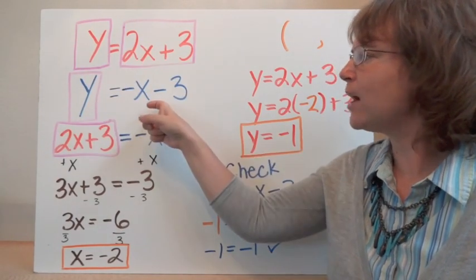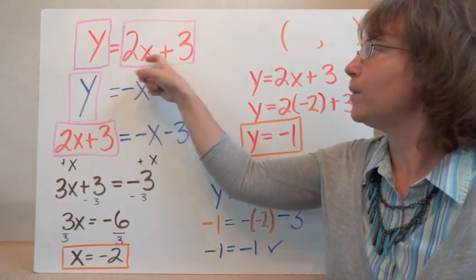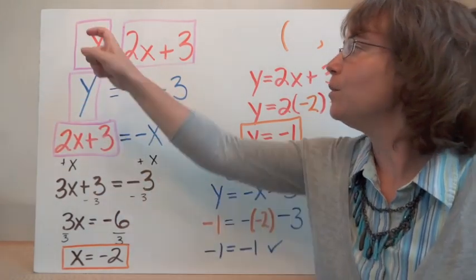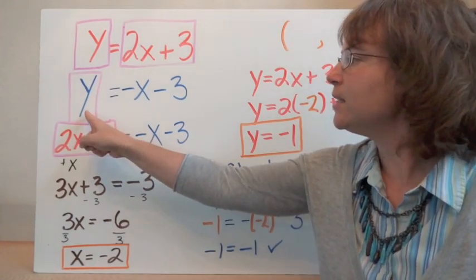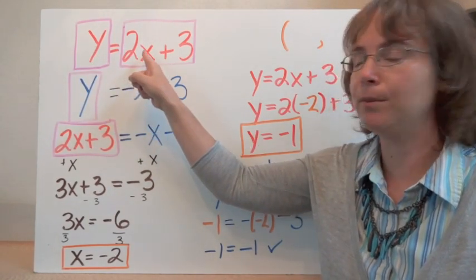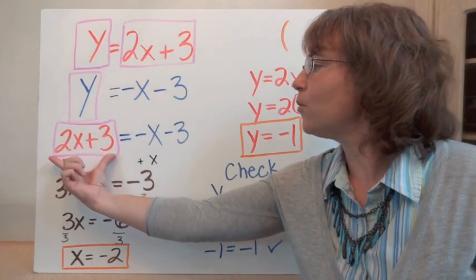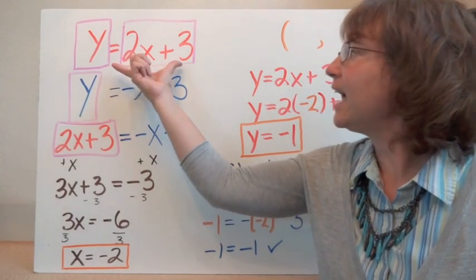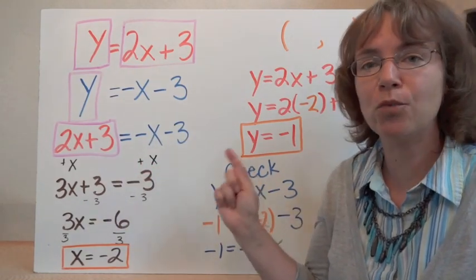So we have y is equal to 2x plus 3, and we also have y is equal to negative x minus 3. We can take the y from the first equation — y is equal to 2x plus 3 — and replace it with the y in the second equation. We want our y's to be equal so we can find a point that works for both of them. So instead of y in my second equation, I'm going to replace it with 2x plus 3. This gives me an equation with just one variable.